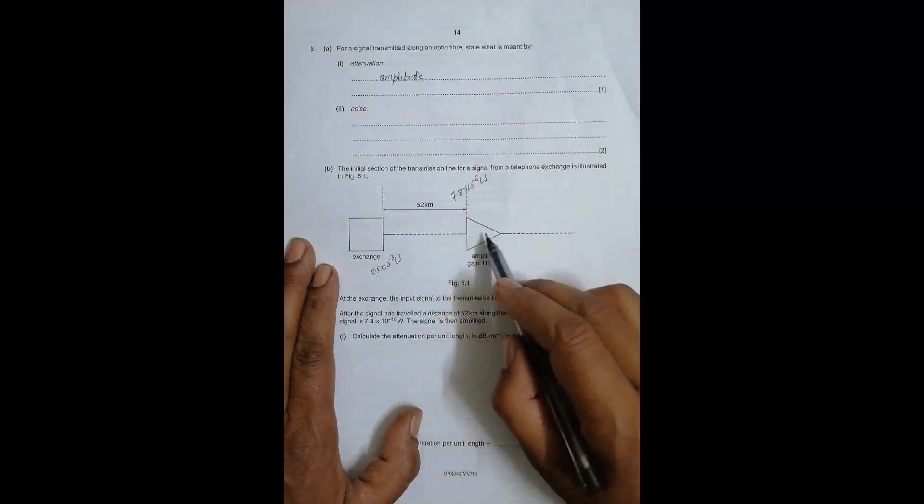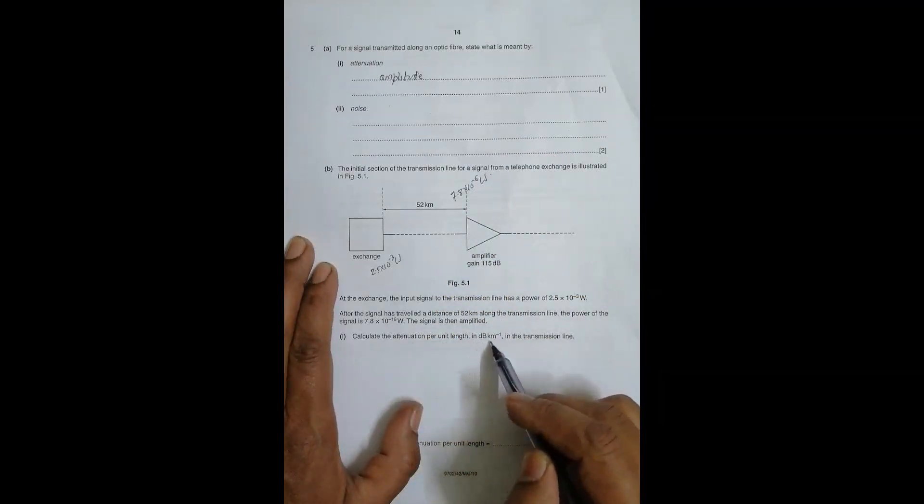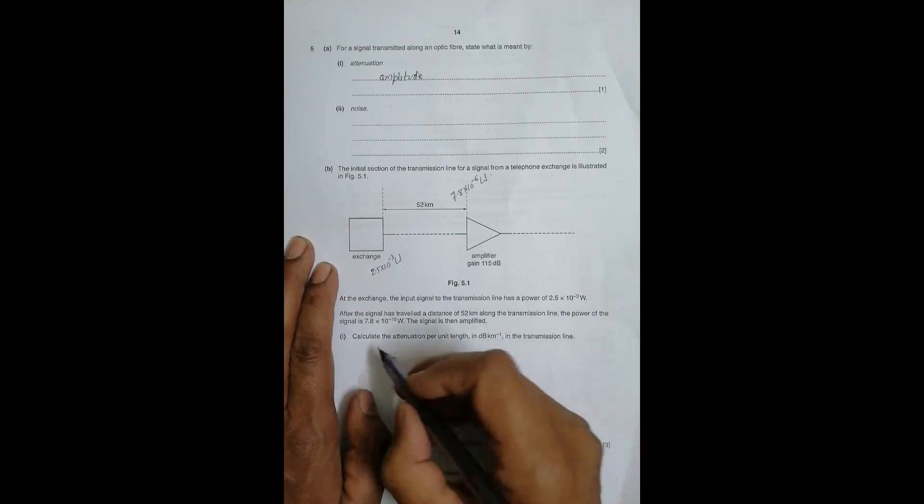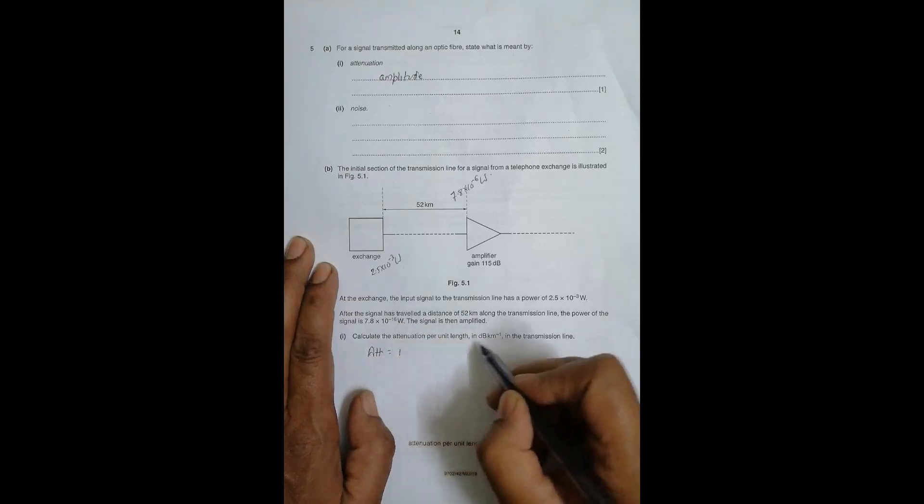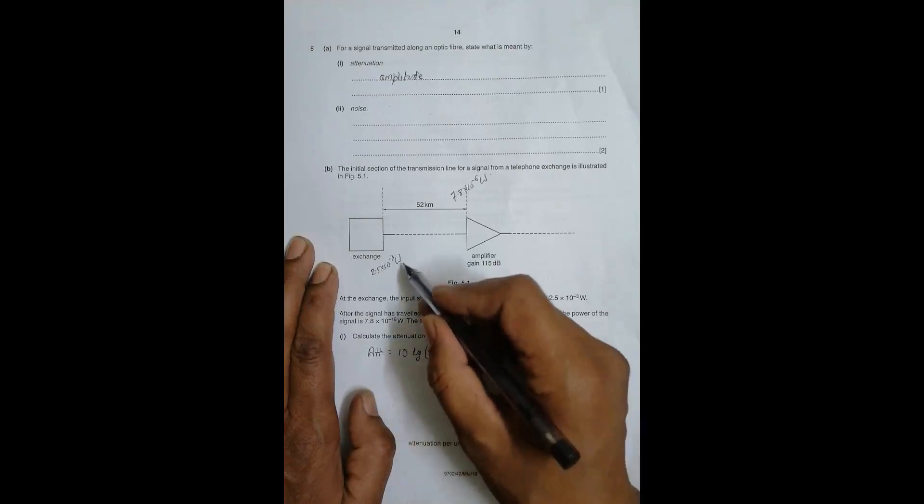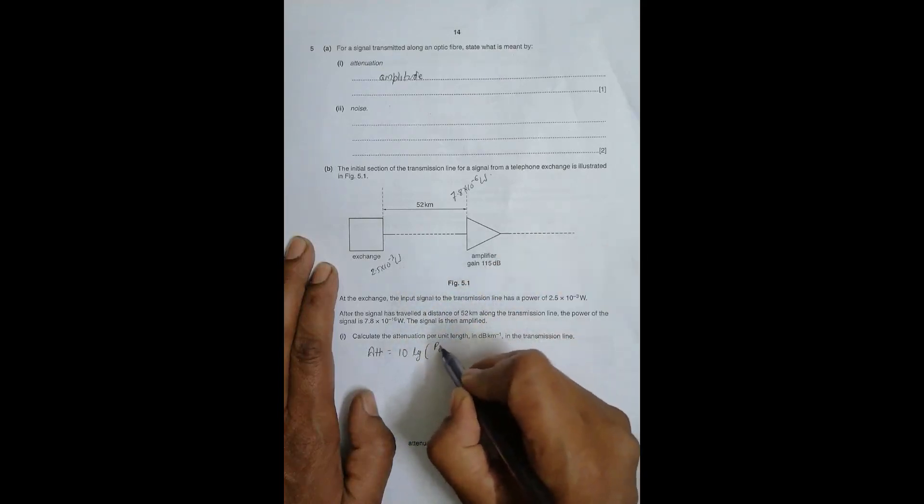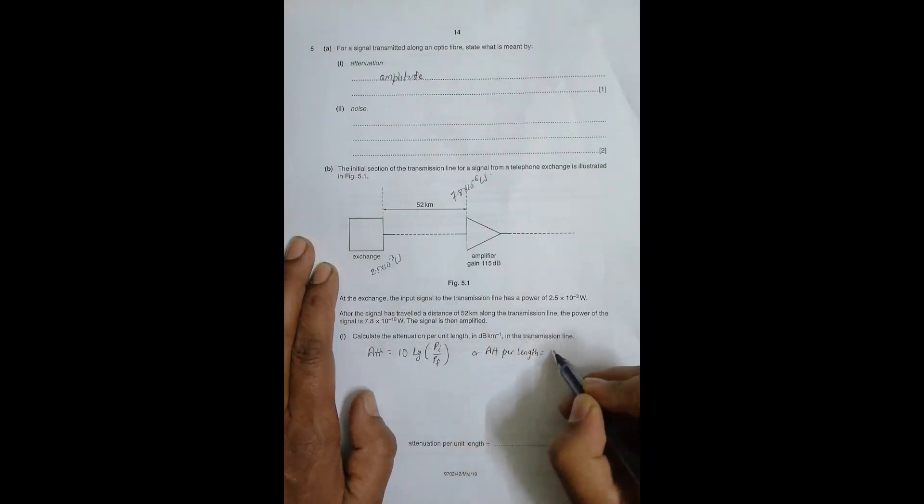Calculate the attenuation per unit length in dB per kilometer in the transfer line. The attenuation in dB is equal to 10 log of power initial by power final, where initial is the higher one and final is the lower one. So attenuation per unit length equals 10 by L times log (P_initial / P_final).